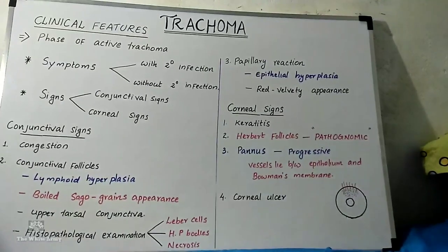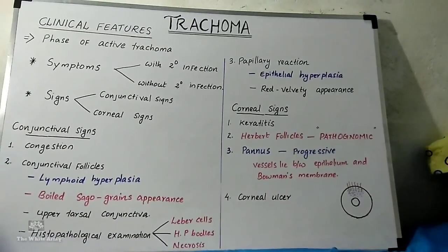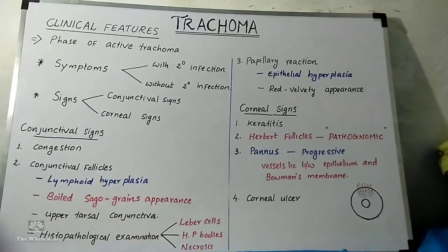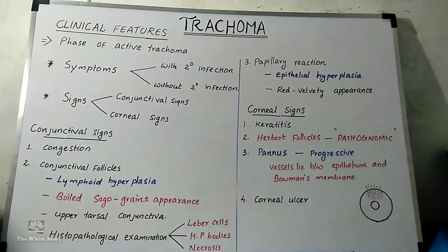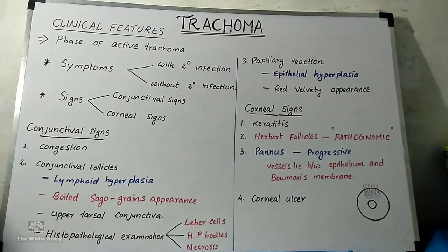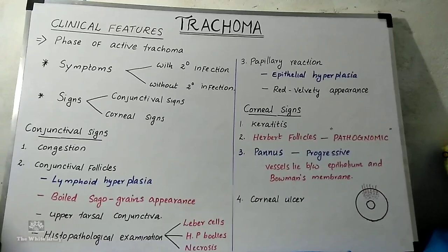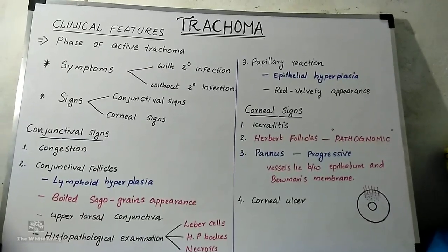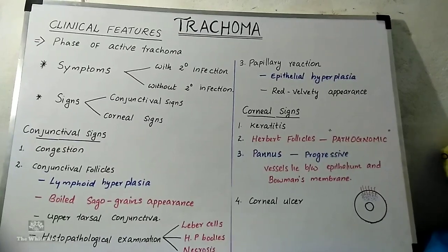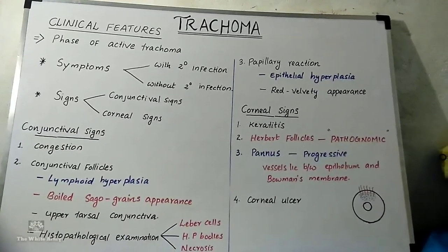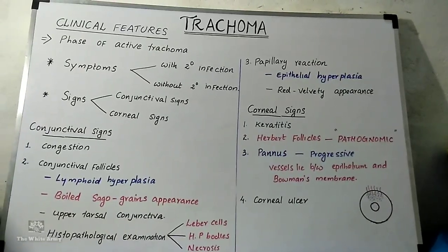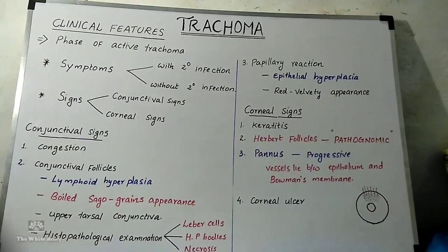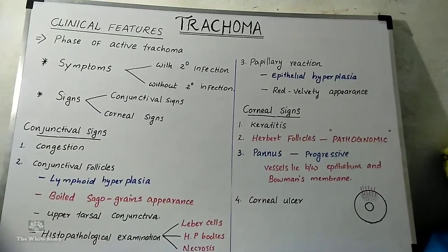The clinical features of trachoma can be described in two phases: the phase of active trachoma and the phase of cicatricial trachoma. In active trachoma, there is active chlamydial infection. Symptoms are determined by the presence or absence of secondary infection. In pure trachoma, there is mild foreign body sensation, occasional lacrimation, slight stickiness of the lids, and scanty mucoid discharge. With secondary bacterial infection, it presents as acute mucopurulent conjunctivitis.